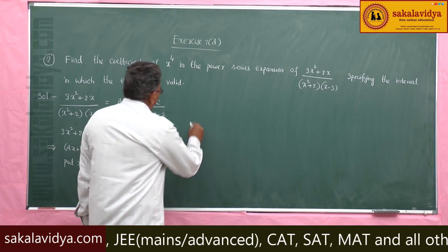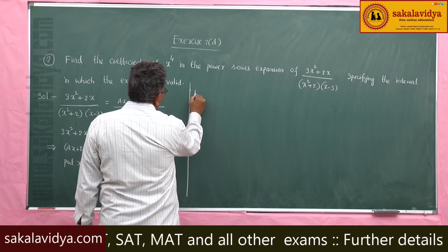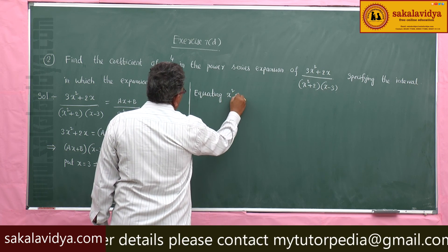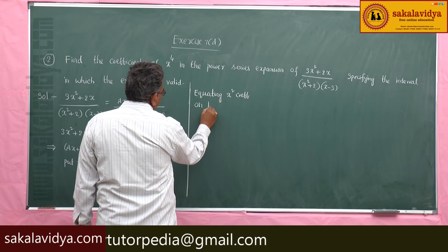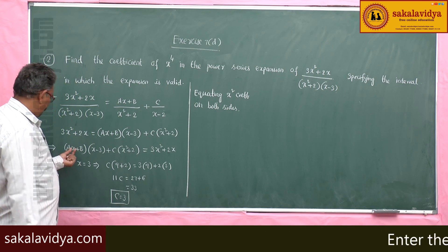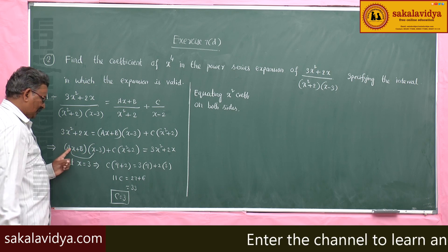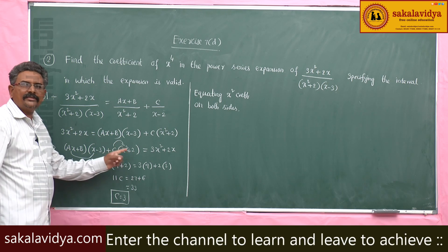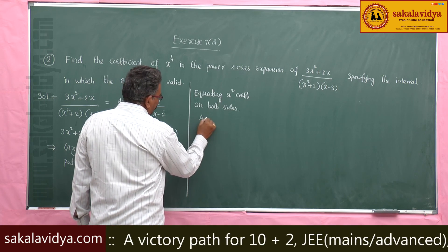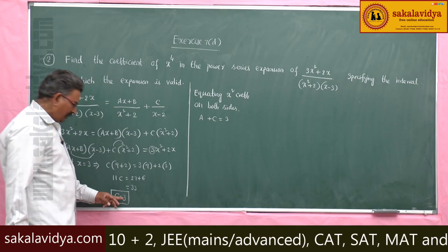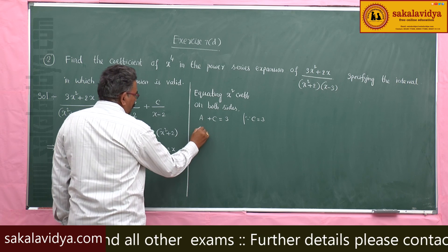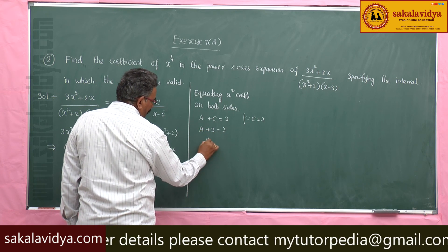Equating x² coefficients on both sides: the x² terms come from ax·x giving ax², and c·x². So we get a + c = 3. Since c = 3, substituting gives a + 3 = 3, so a = 0.